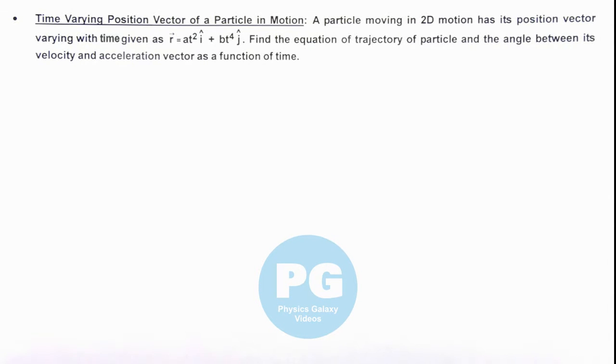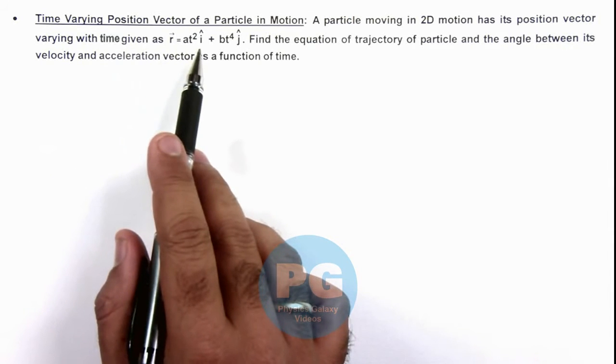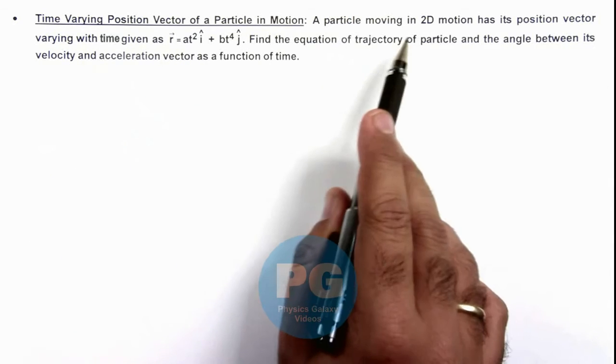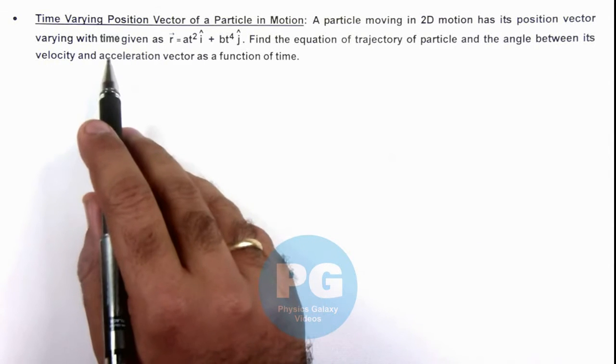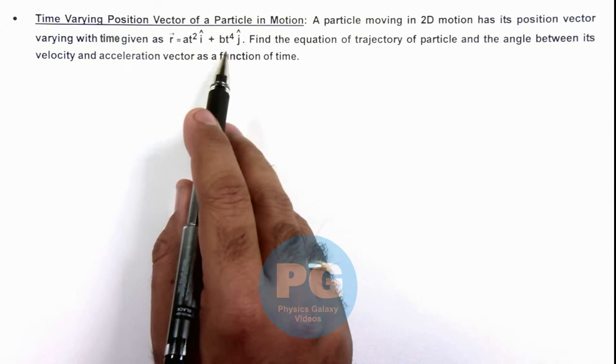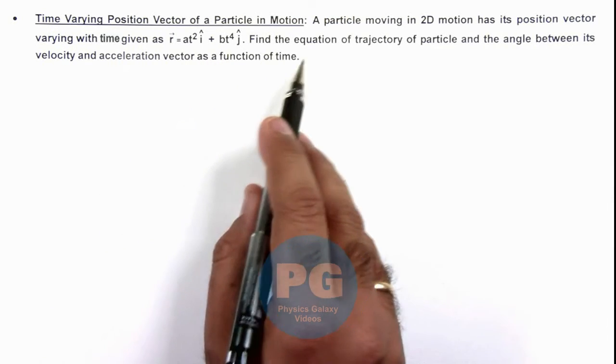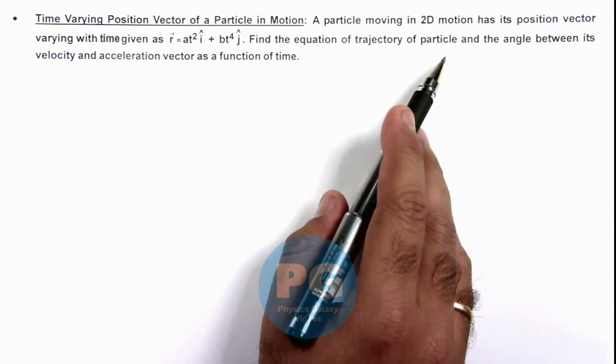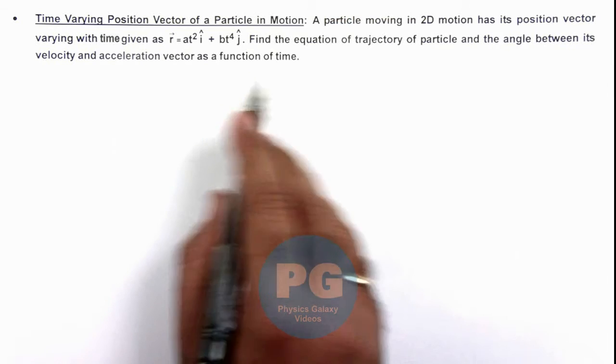In this illustration, we'll discuss a particle in motion with a time-varying position vector. We are given that a particle moving in 2D motion has its position vector varying with time as r = at²î + bt⁴ĵ. We are required to find the equation of trajectory of the particle and the angle between its velocity and acceleration vector as a function of time.